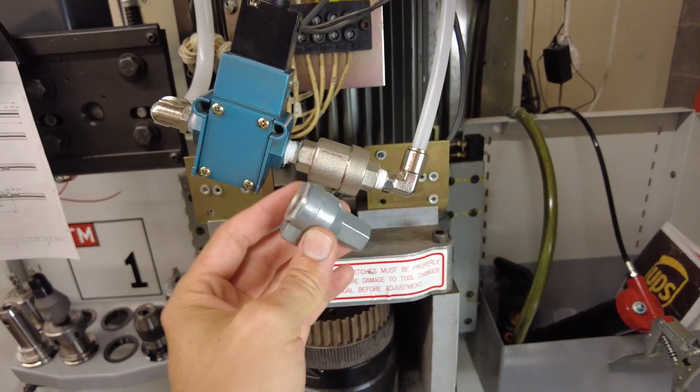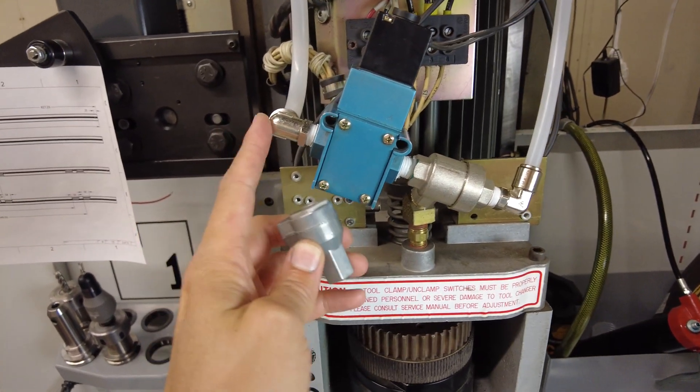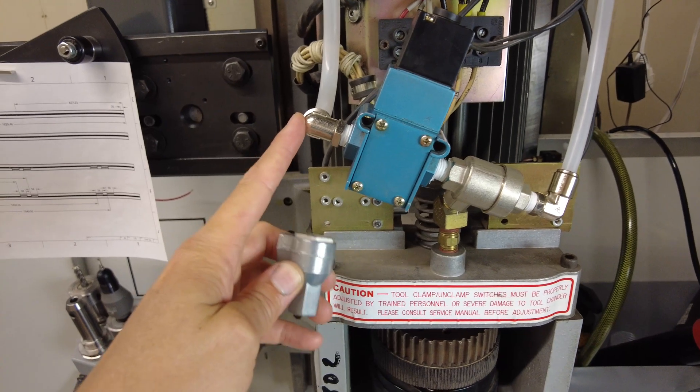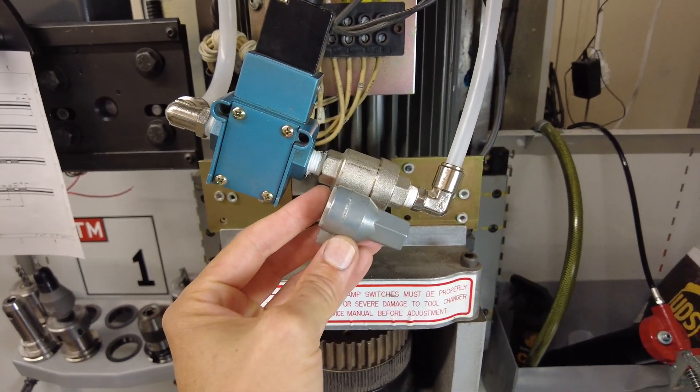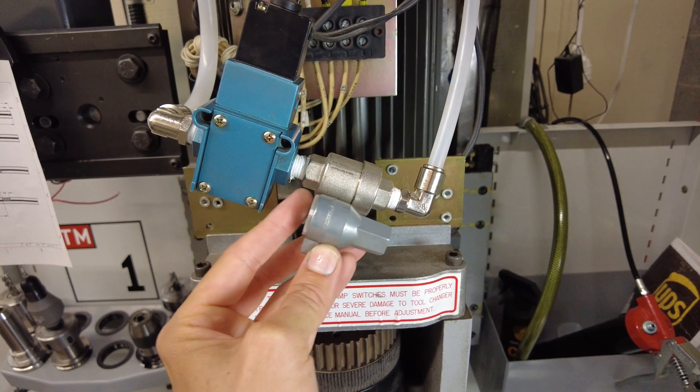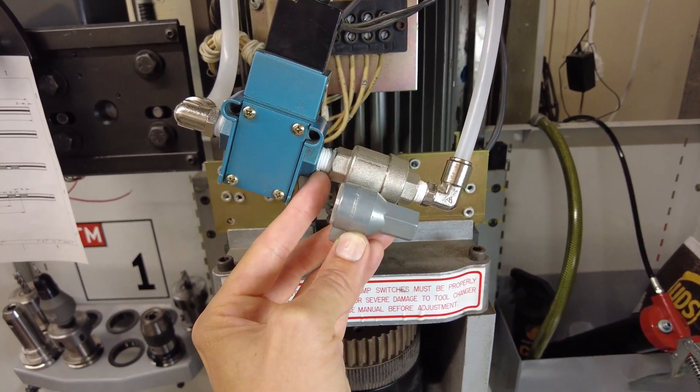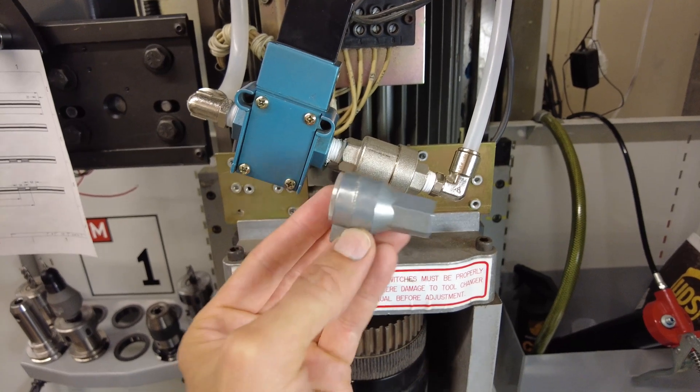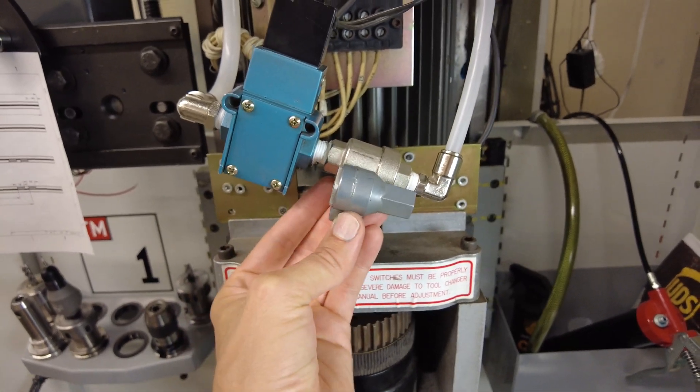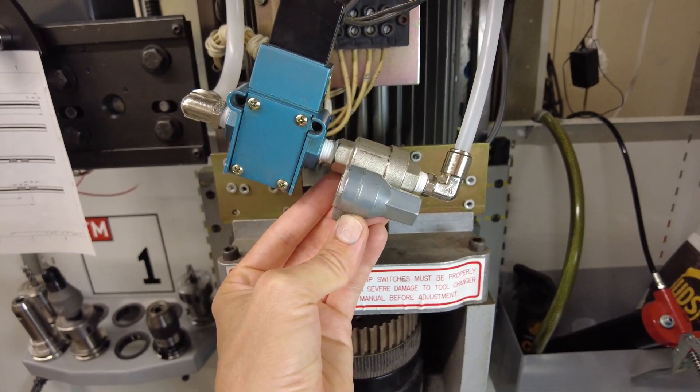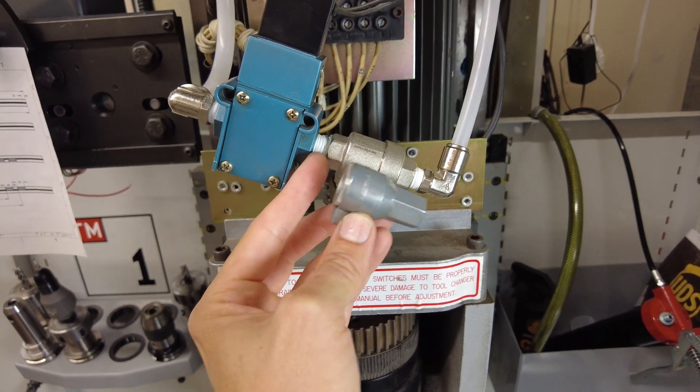I did run into a problem when putting the cover back on because this was sticking out into the cover. This fitting, the new one, is about half an inch longer on the high pressure side than the Humphrey valve. So there's probably a reason they chose that Humphrey valve—they could get all these pieces to fit under the cover.